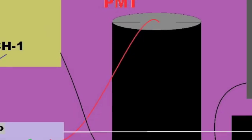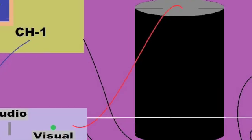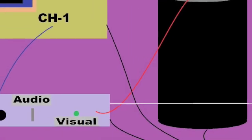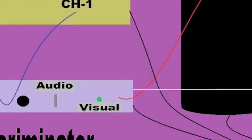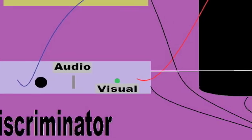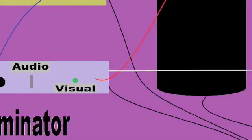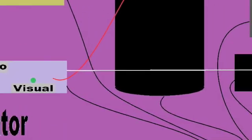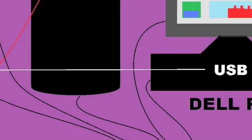The scintillator's connected to the PMT cable, the PMT cable's connected to the discriminator, the discriminator's connected to the USB cord, which is how the computer reads the data.